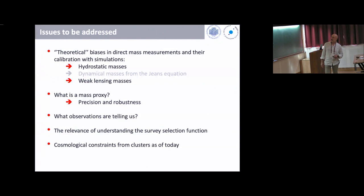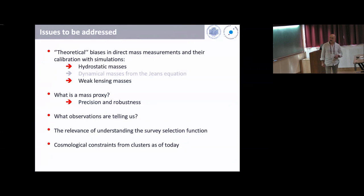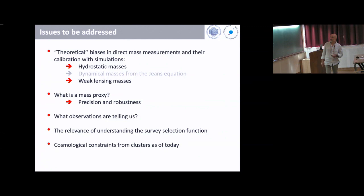The issues I want to address: theoretical biases in direct mass measurements and their calibration with simulations. By direct mass measurement I mean we have precise enough observations that allow us to apply some criterion — like hydrostatic equilibrium, virial equilibrium, or strong and weak lensing data — to measure cluster masses. I will focus on hydrostatic masses and spend a few words on dynamical masses from the Jeans equation, though testing these methods with simulations is a relatively open field.